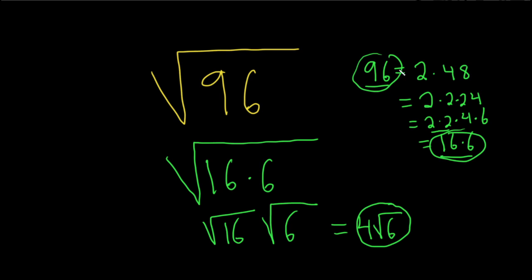You know, I didn't do it that way either. I just started by dividing by 2 and then dividing by 2 again. And then using the fact that 24 is 4 times 6 and saying,